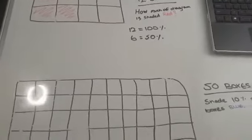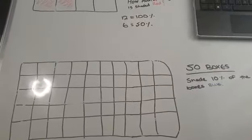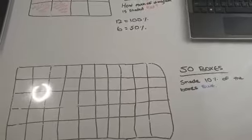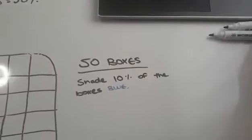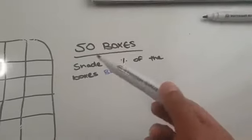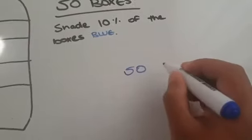Moving down to a bigger box here. Now, these are 50 boxes. Say 10% of the boxes is blue. Well, I need to find 10% of 50 boxes. So 50 is our whole number. That equals 100%. But I need 10%.